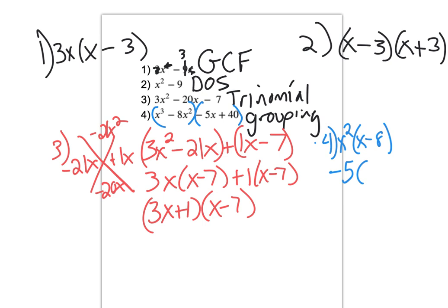I'm left with x minus 8. Positive 40 divided by negative 5 would be negative 8. I need what I had on the outside on the first one. So x squared minus 5 and then x minus 8. Thanks for watching.